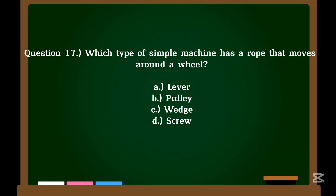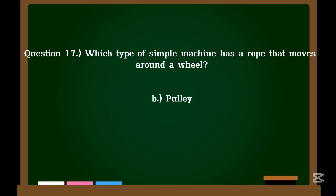Question 17. Which type of simple machine has a rope that moves around a wheel? A. Lever. B. Pulley. C. Wedge. D. Screw. Correct answer: B. Pulley.